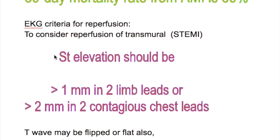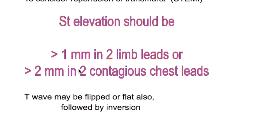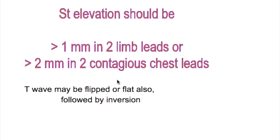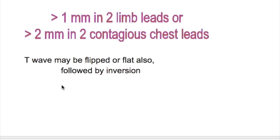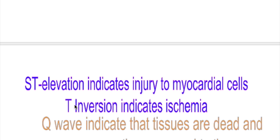The EKG criteria for reperfusion: to consider reperfusion of a transmural infarction, ST elevation should be more than 1 mm in two limb leads or more than 2 mm in two contiguous chest leads. The T-wave may be flipped or flat and is followed by inversion.